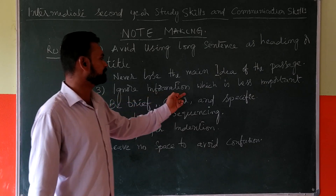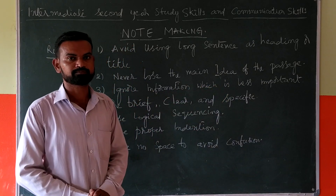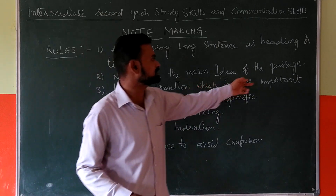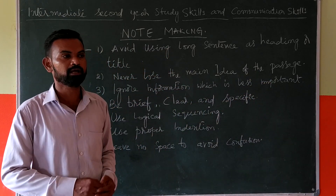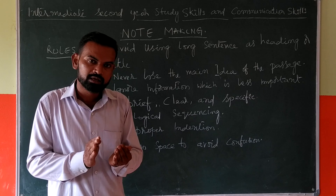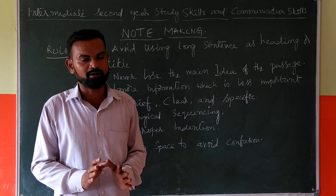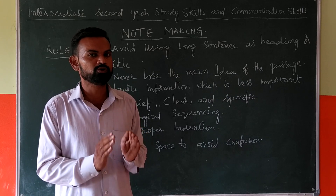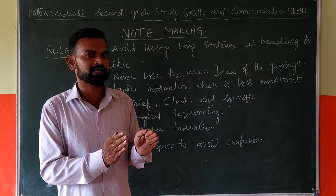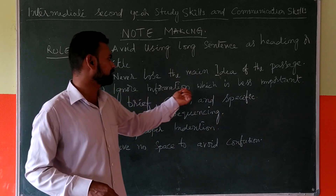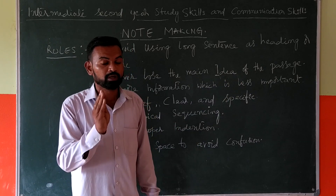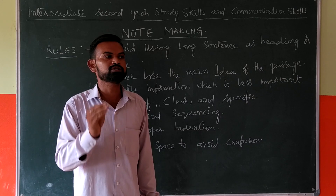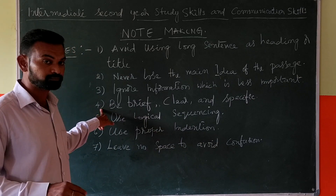Don't forget the main idea, main theme, main gist — whether it is a passage or a paragraph. Third principle: ignore information which is less important. From 15 sentences, choose which is important. Ignore the less important ones. Make only five lines — the final lines give you the most information.